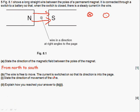The wire is free to move. The current is switched on so that its direction is into the page, what we had before. State the direction of the movement of the wire.